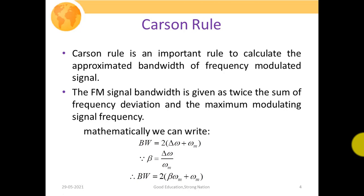The Carson rule is the important rule used to calculate the approximated bandwidth of the frequency modulated signal. According to this rule, the FM signal bandwidth is given as twice the sum of the frequency deviation and the maximum modulated signal frequency — that is, it is equivalent to twice of Δf plus fm. Mathematically we write bandwidth equal to twice of Δω plus ωm. If talking about angular frequency we use Δω, but if we need to measure in hertz we use Δf instead of Δω and fm instead of ωm.